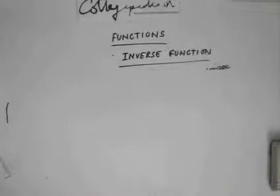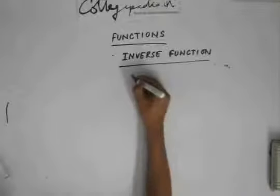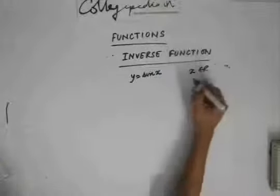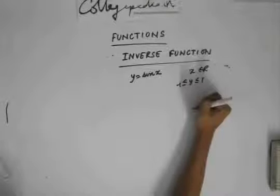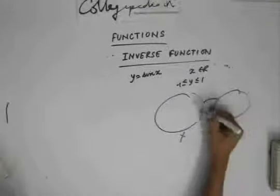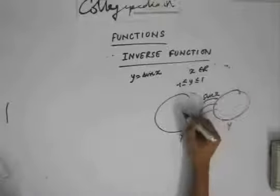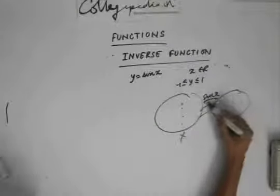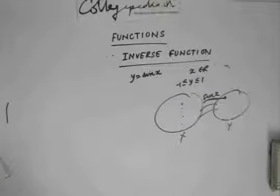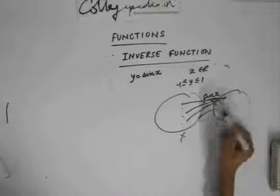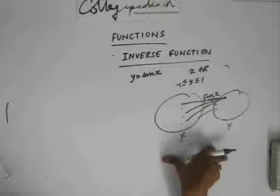Let's start with a basic example. Take y equals sine of x. x can take all real numbers and y lies between minus one to one. If we look at sets x and y with the rule sine of x, elements like zero, two pi, four pi all have the same image — zero. Since sine x is a periodic function, many elements have the same image, so this function is not invertible.